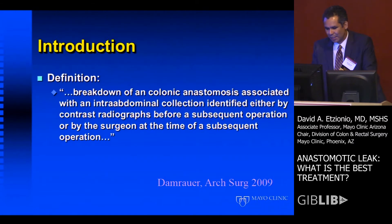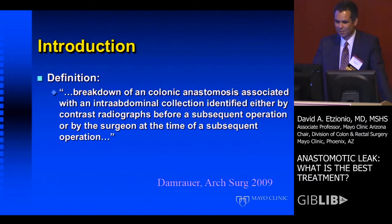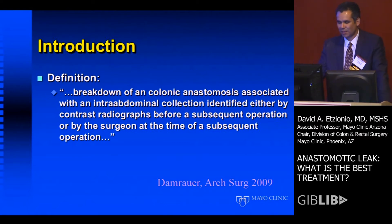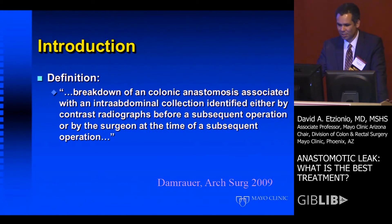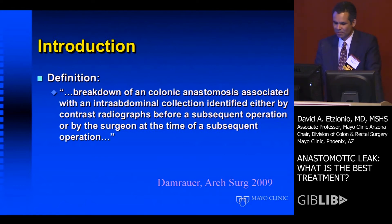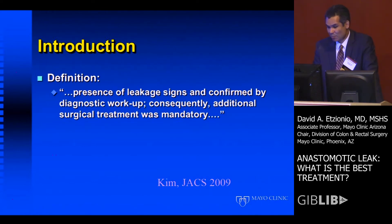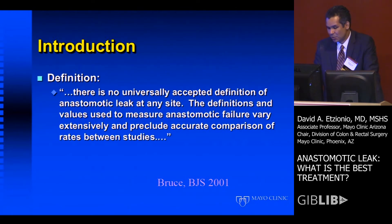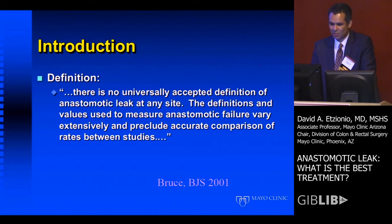I have no disclosures. So first, how are we going to define what an anastomotic leak is? This is a definition from a pretty important article in the anastomotic leak literature: breakdown of a colonic anastomosis associated with an intra-abdominal collection identified either by contrast radiographs before a subsequent operation, or by the surgeon at the time of subsequent operation, with presence of leakage signs confirmed by diagnostic workup. There is no universally accepted definition of anastomotic leak at any site, and the definitions and values used to measure anastomotic failure vary extensively.